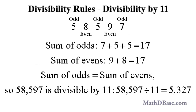If the sum of the even-placed digits of a whole number equals the sum of the odd-placed digits, or if the difference between those sums is divisible by 11, then the number is divisible by 11. For example, in 58,597, the odd-placed digits are 7, 5, and 5, and their sum is 17. Since the sums of the even and odd placed digits are equal, 58,597 is divisible by 11, and 58,597 divided by 11 equals 5,327.